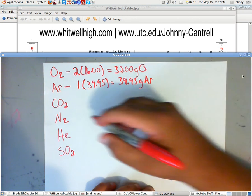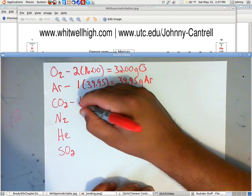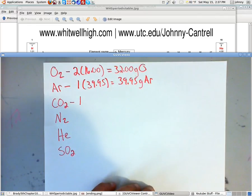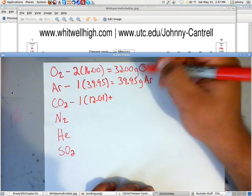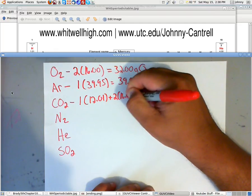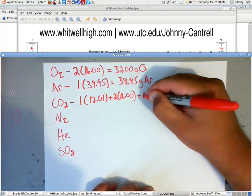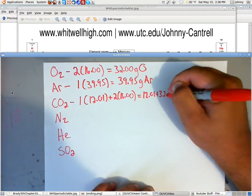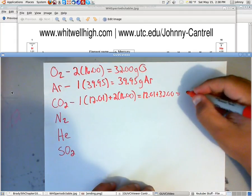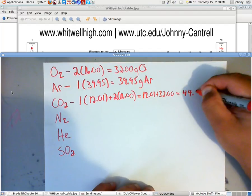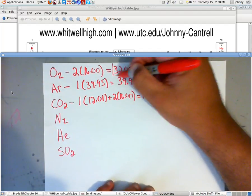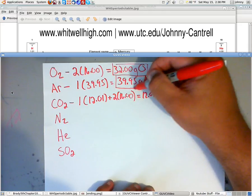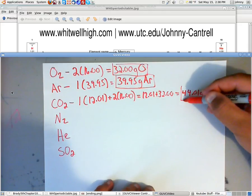Now, the CO2, you've got one carbon. And that one carbon, if you look on your periodic table, is 12.01. So basically, you end up having 12.01 plus 32, which adds up to 44.01 grams of CO2. So far, we've got 32 grams of O2, we've got 39.95 grams of Ar, we've got 44.01 grams of CO2.